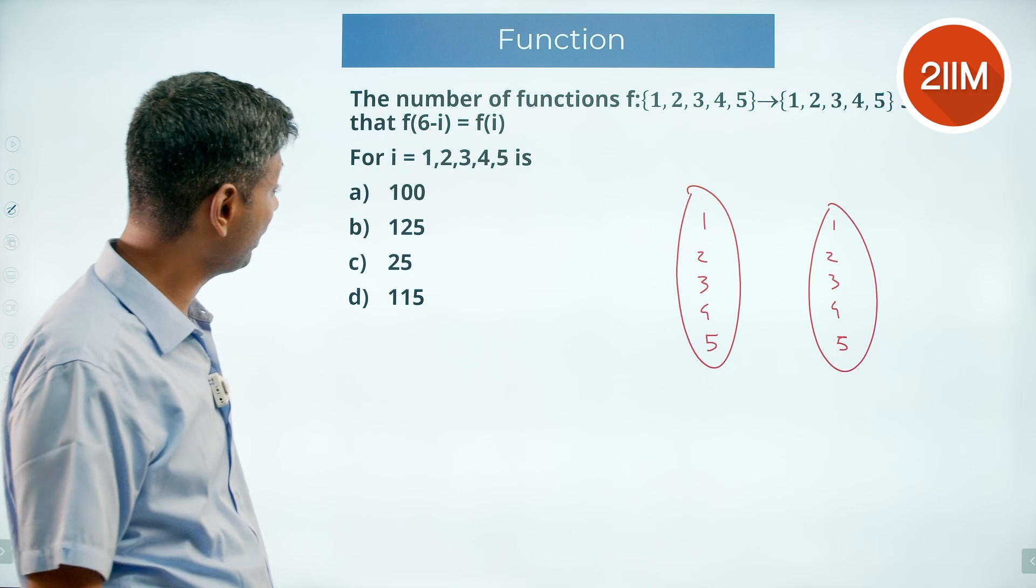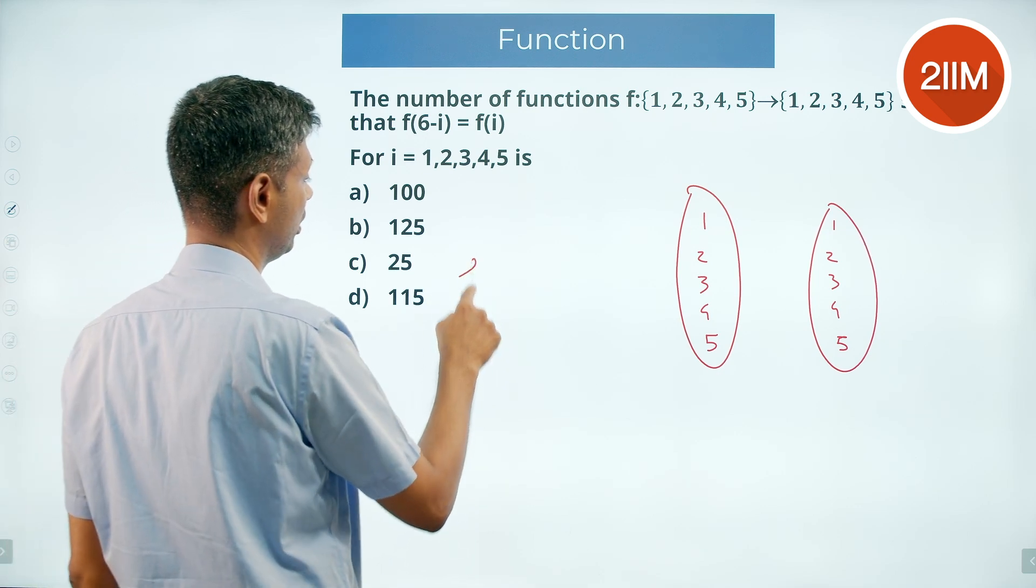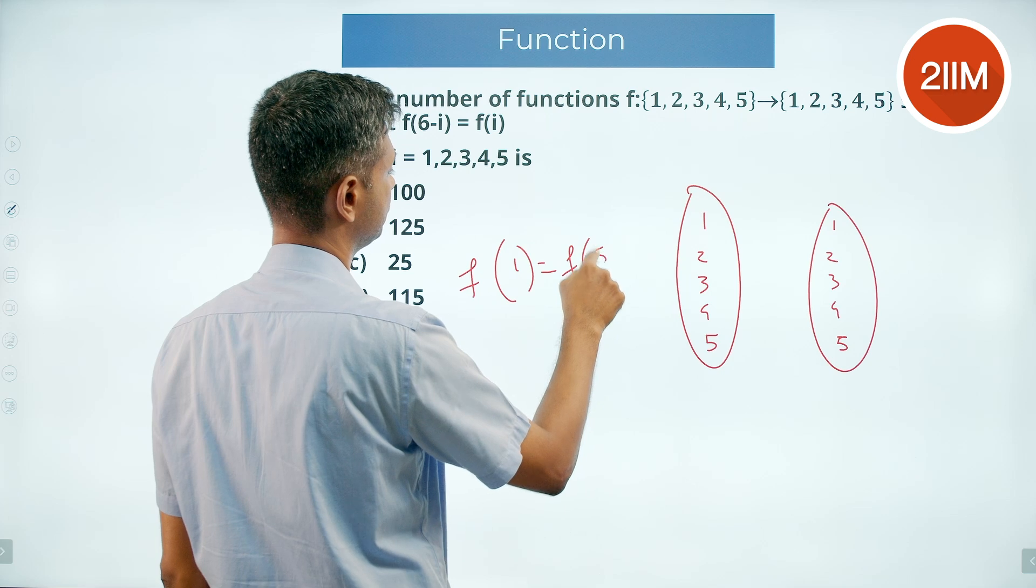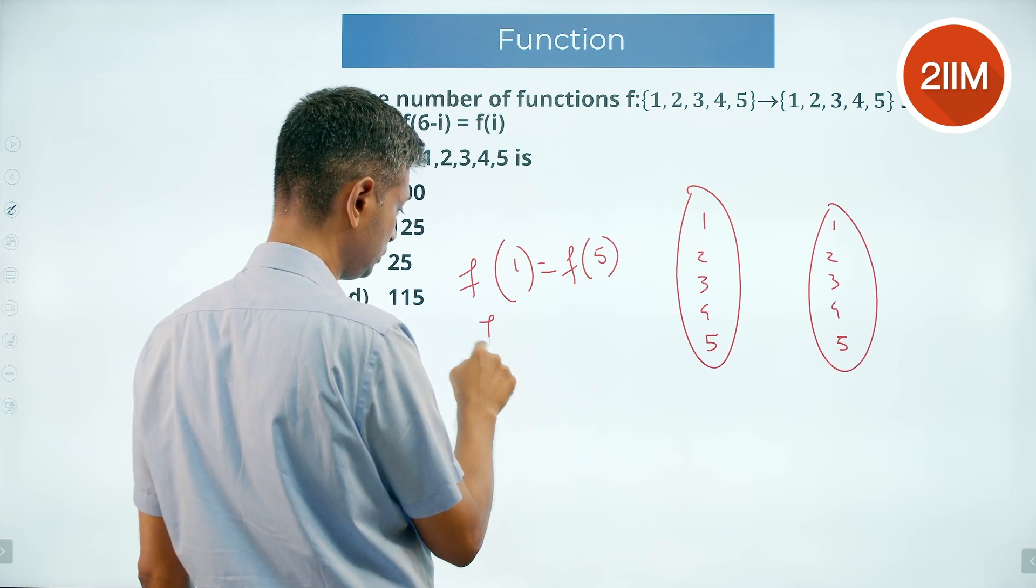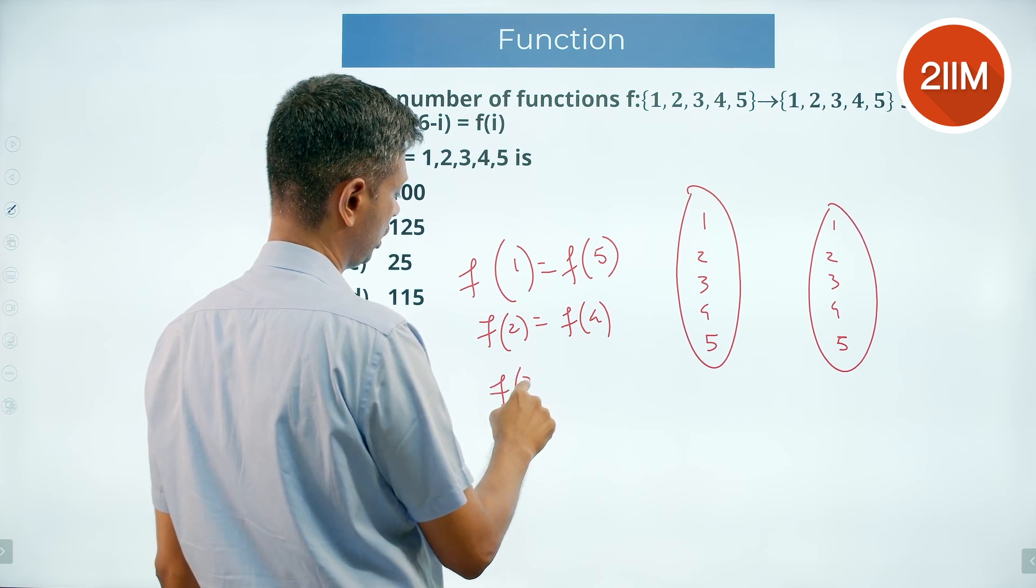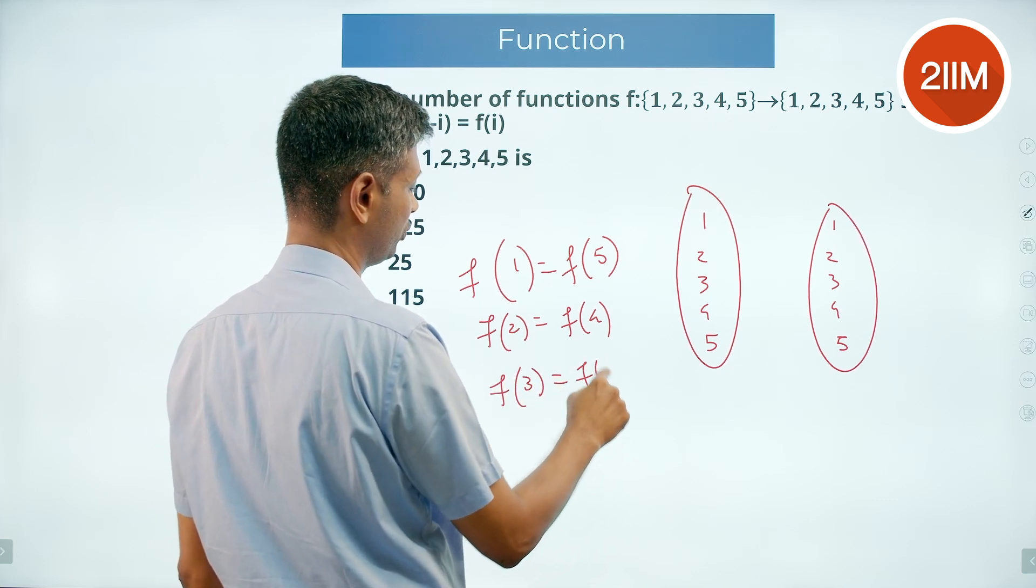such that f of 6 minus i is f of i. So f of 1 is f of 5, f of 2 is equal to f of 4, f of 3 is equal to f of 3. f of 3 can be